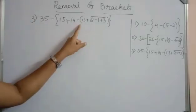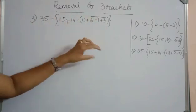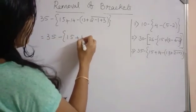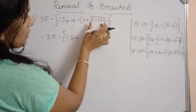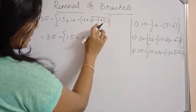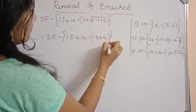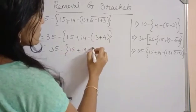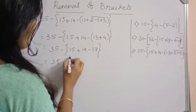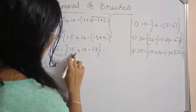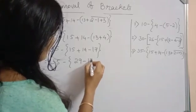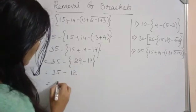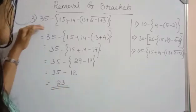Now consider this question, which has small brackets, a vinculum, and curly brackets. As per the order, first simplify the terms inside the vinculum: 2 minus 1 plus 3 equals 4. So the expression becomes 35 minus {15 plus 14 minus (13 plus 4)}, which gives 13 plus 4 equals 17. Simplify further: 15 plus 14 minus 17 equals 29 minus 17 equals 12. Then 35 minus 12 equals 23. That is the answer.